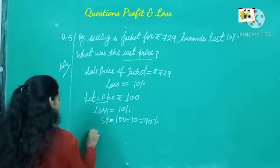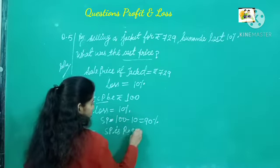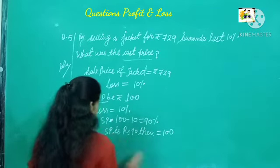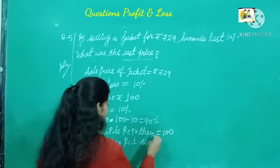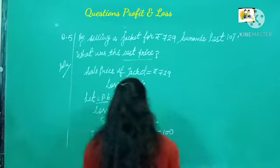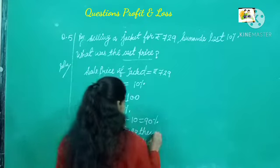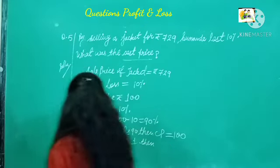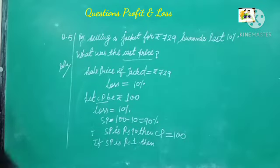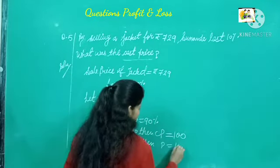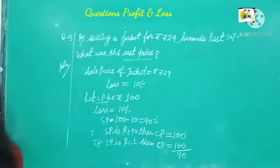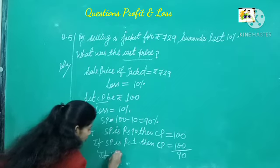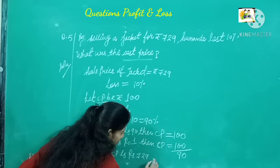If SP is Rs. 1, then CP is 100 divided by 90. Now, if SP is Rs. 729, then CP equals 729 multiplied by 100 divided by 90, which gives CP equal to Rs. 810.